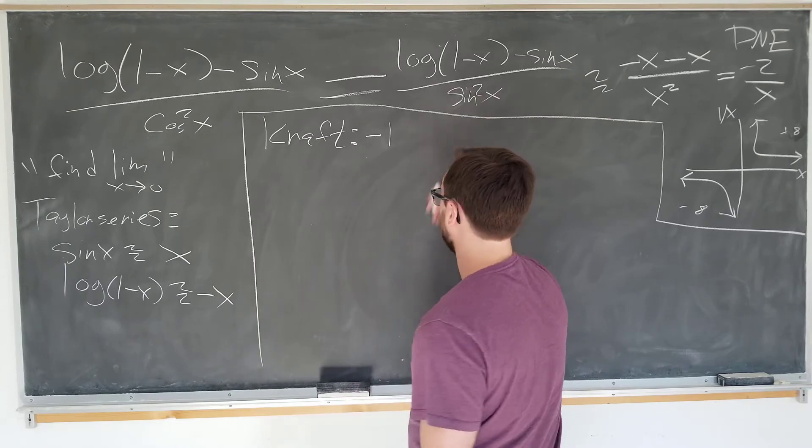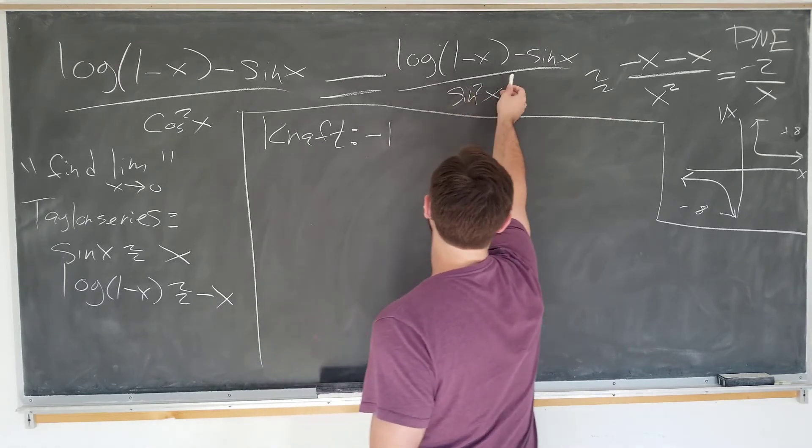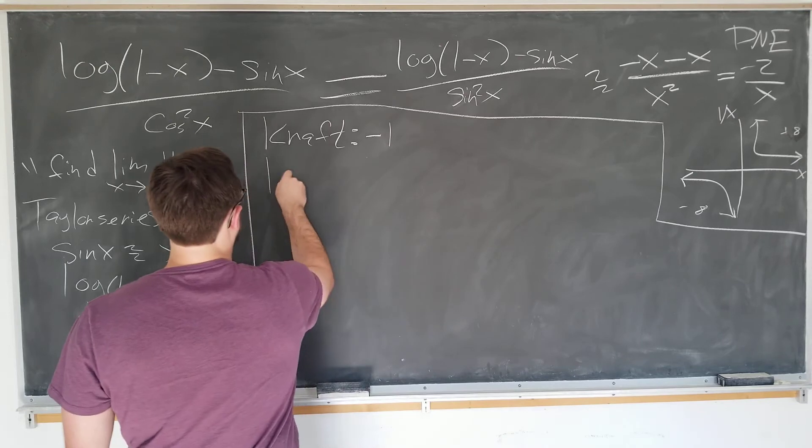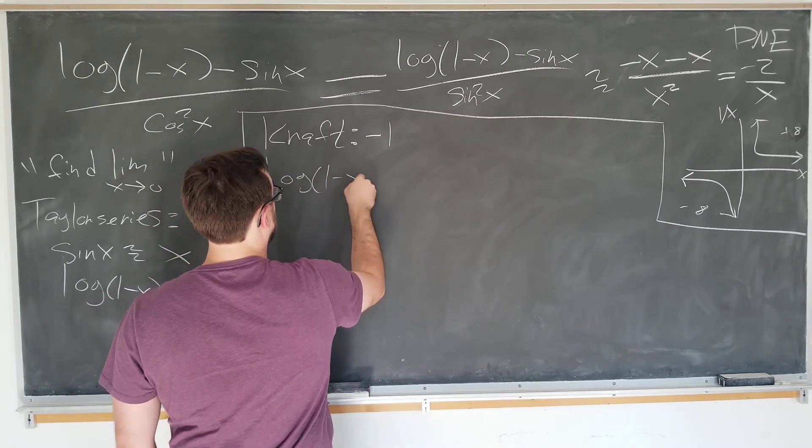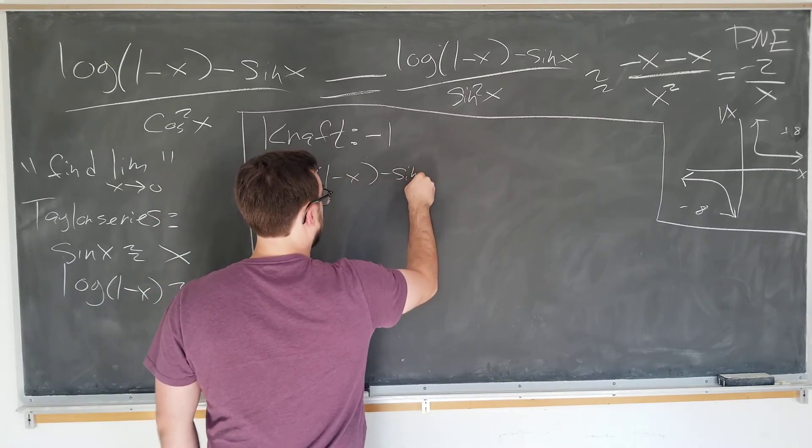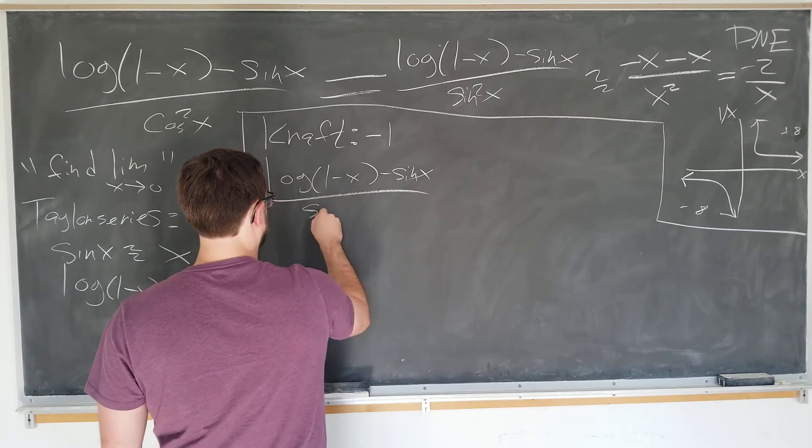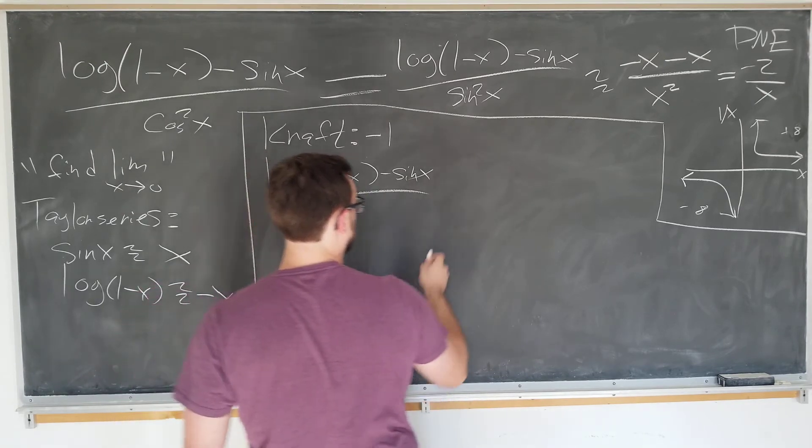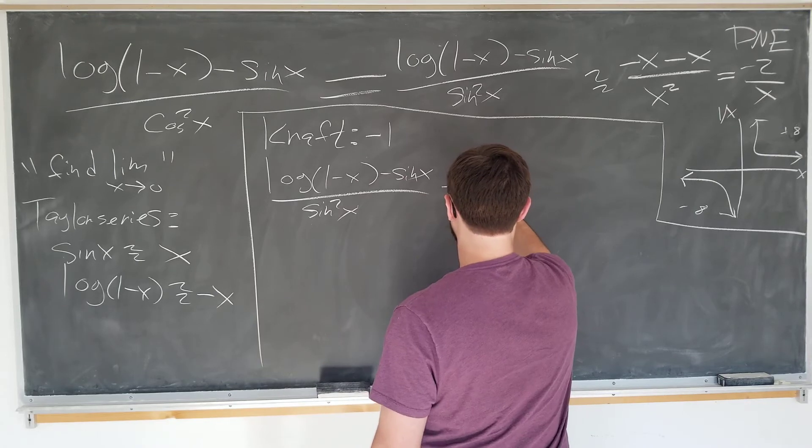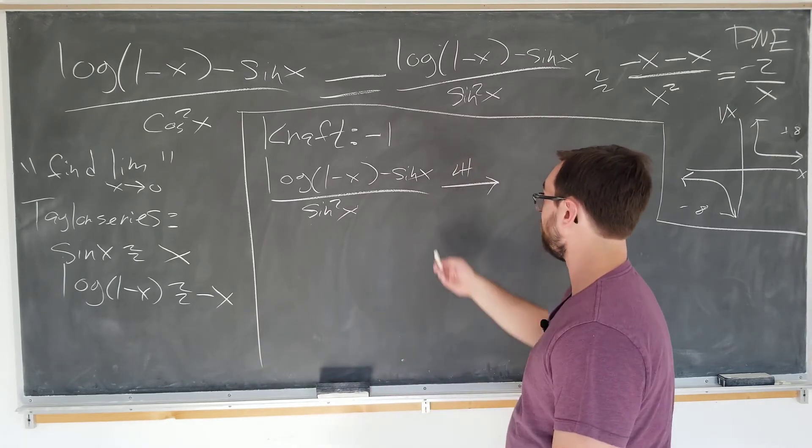Starting from this step here, she begins as follows. She uses L'Hôpital's rule here, and since we have a form 0 over 0, we can do this. Log of 1 is 0, sine 0 is 0, so she's perfectly fine to use L'Hôpital's rule.